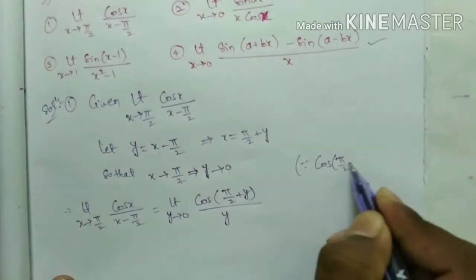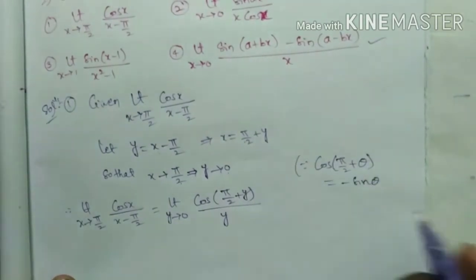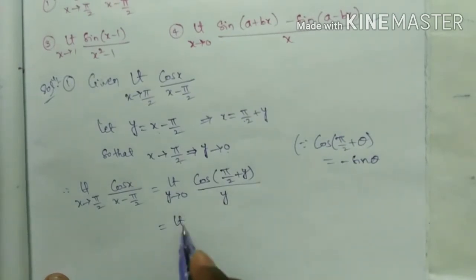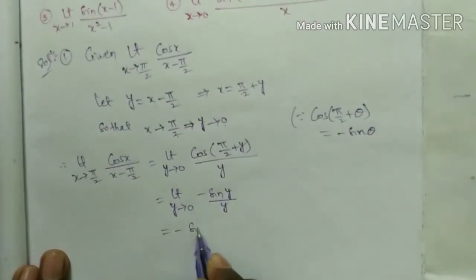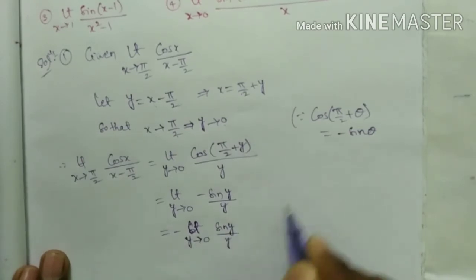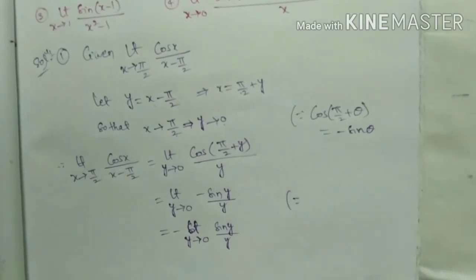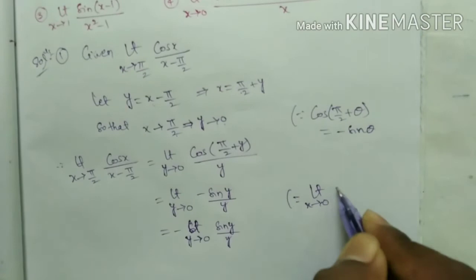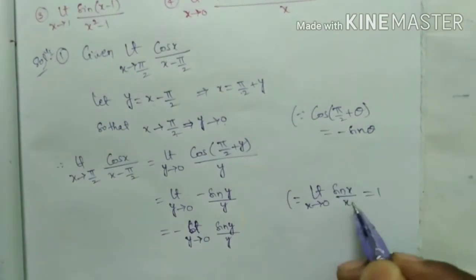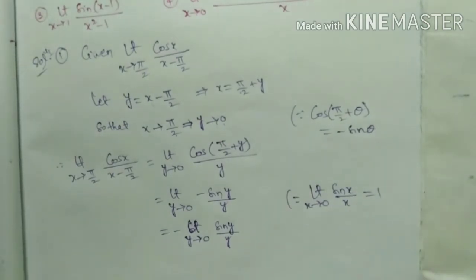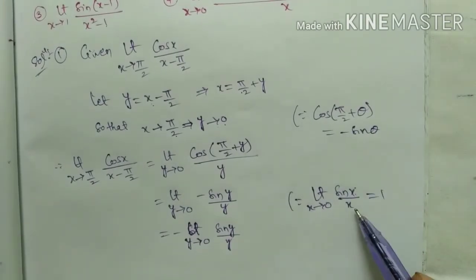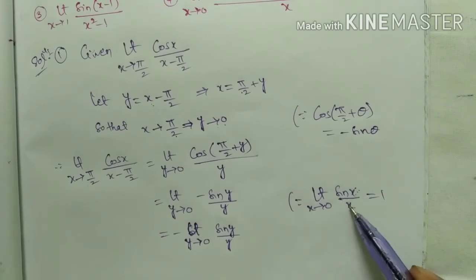Using the identity cos(π/2 + θ) = −sin θ, this becomes limit y tends to 0 of −sin y / y, which equals −1 times limit y tends to 0 of sin y / y. By the standard limit sin x / x = 1 as x tends to 0, the answer is −1.